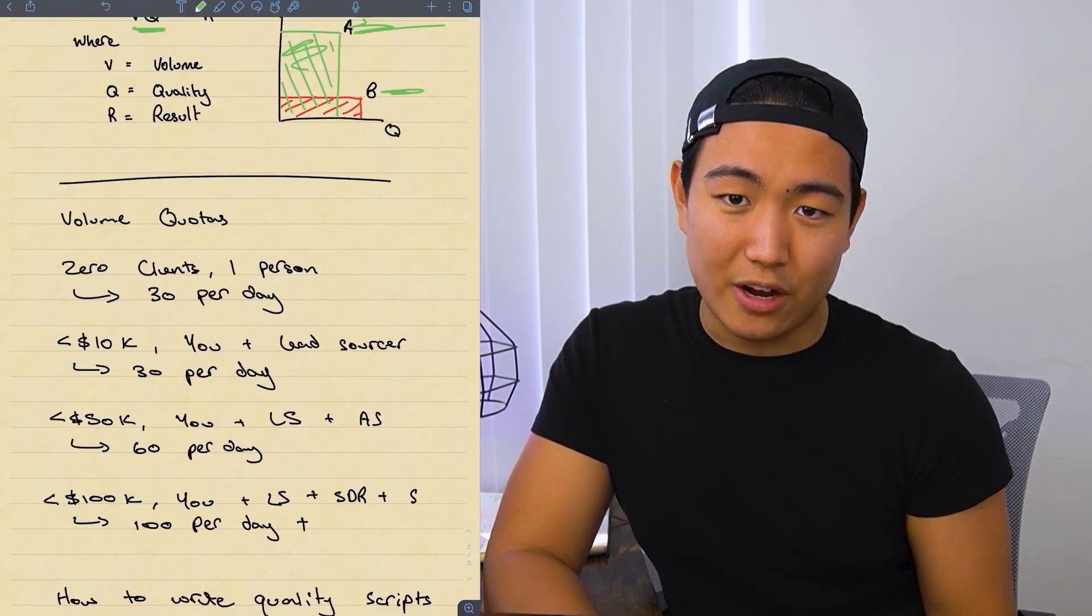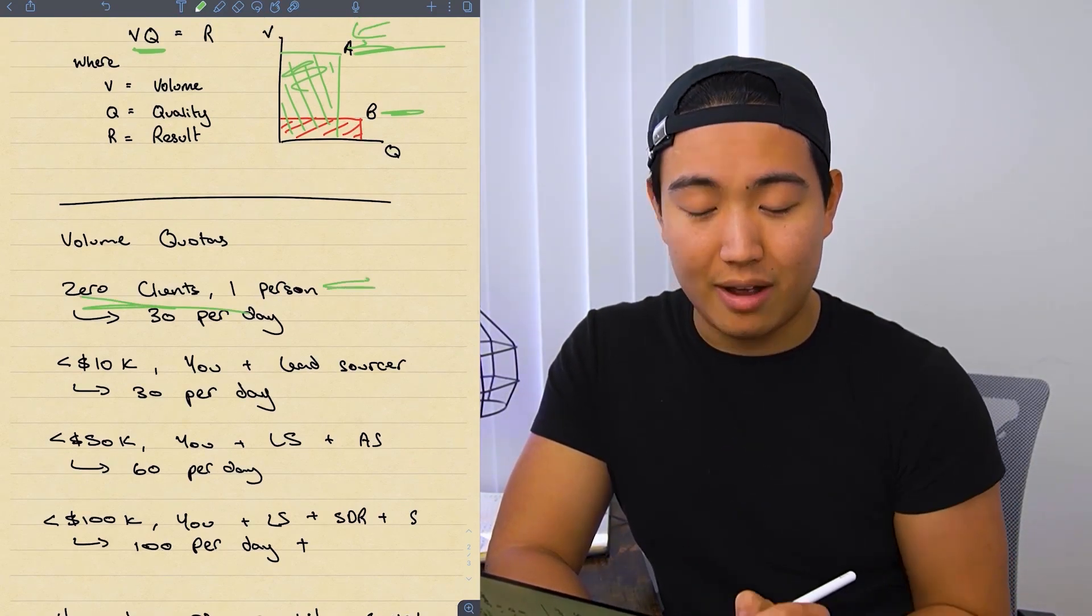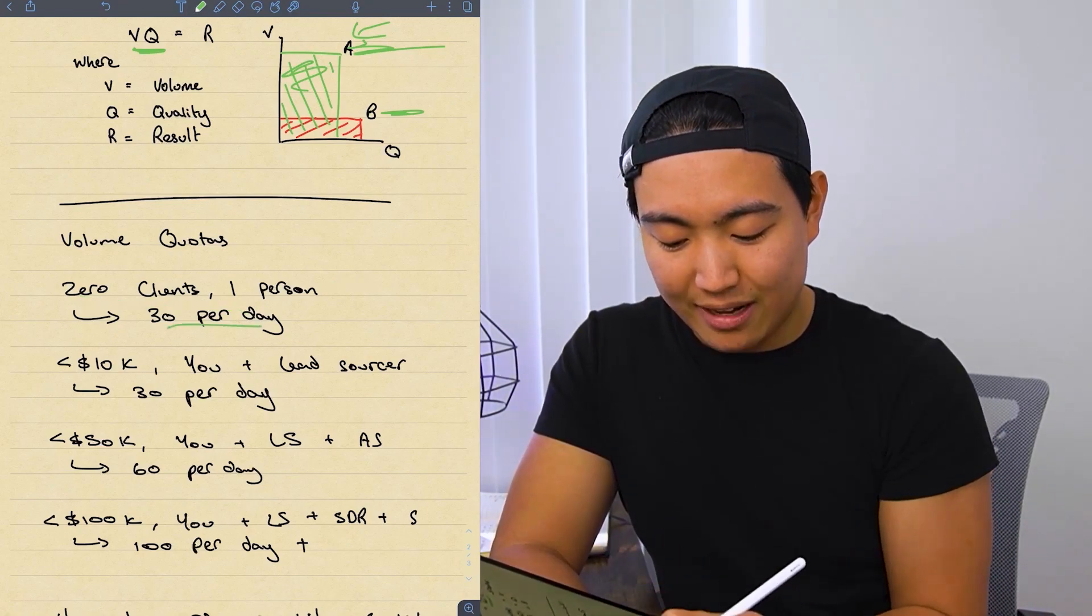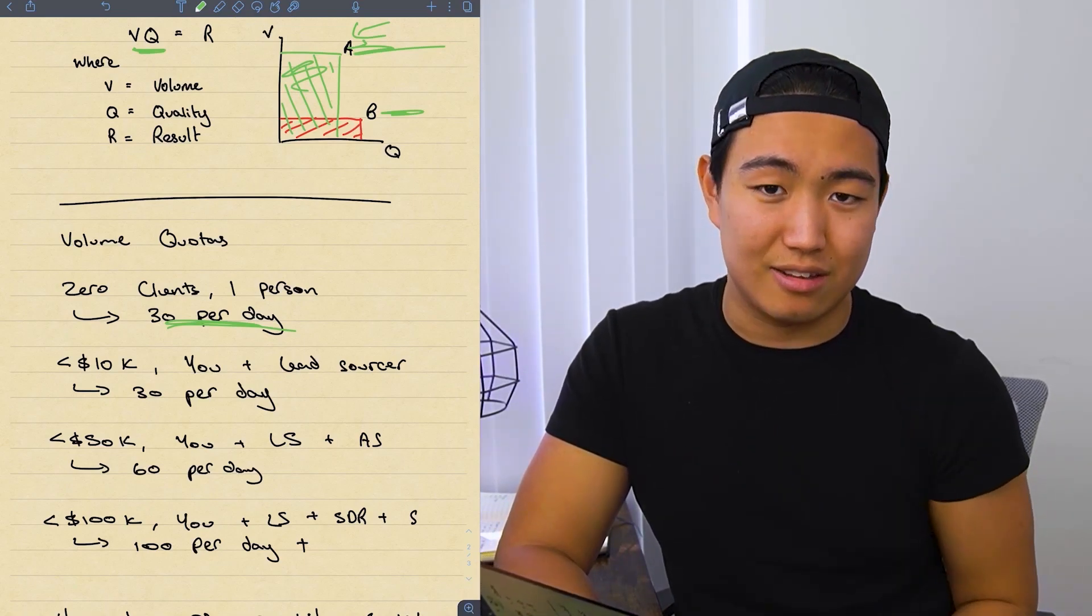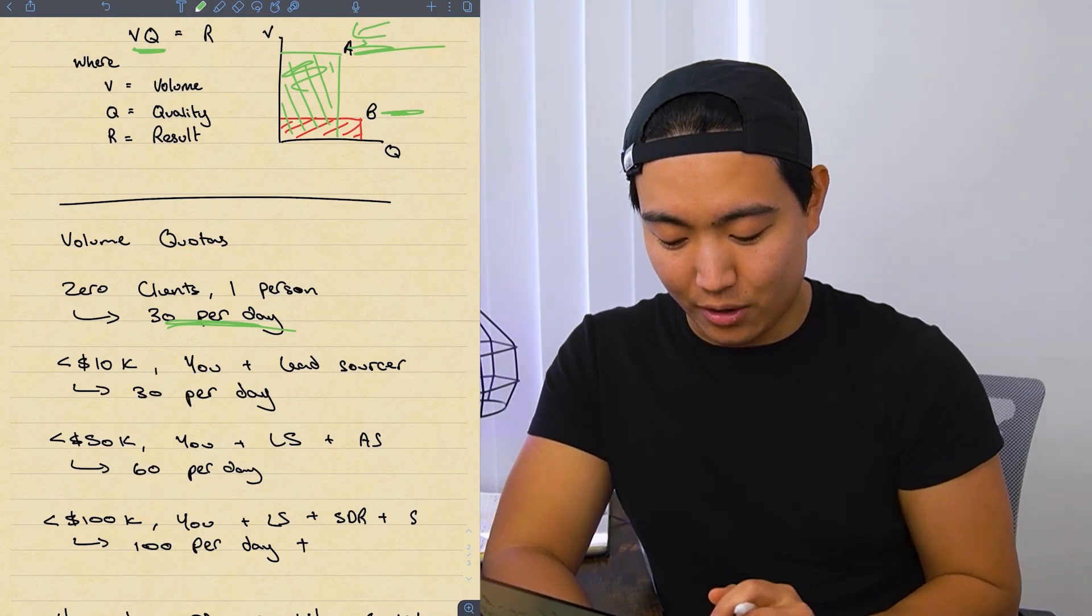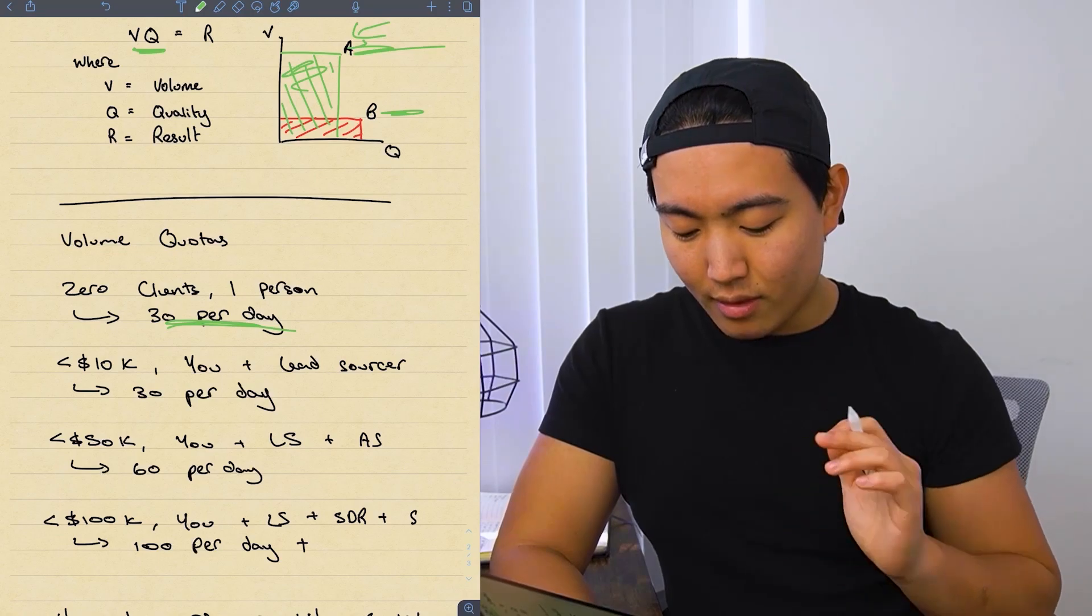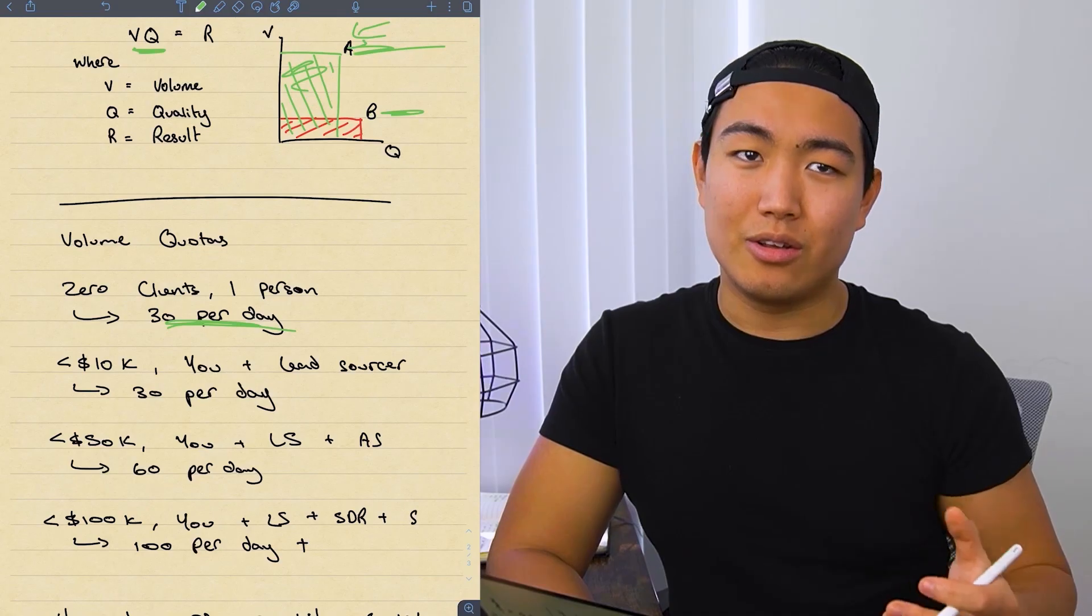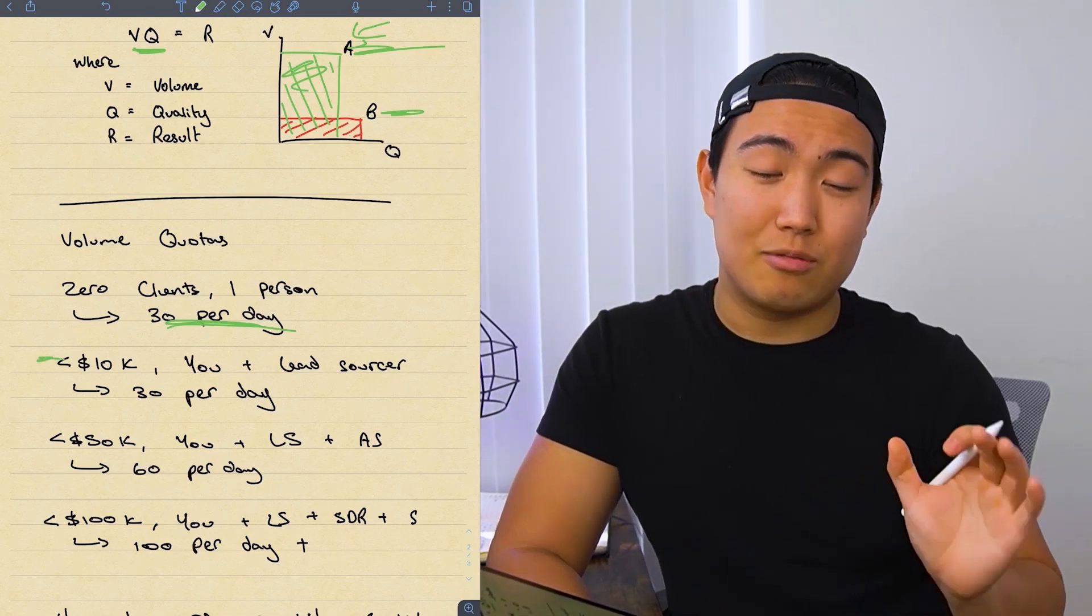So to give you guys more specific quotas. If you have zero clients, you're just getting started, you're one person, you have no team members, no appointment setters, no nothing, you should be hitting 30 every single day. Monday to Friday minimum. You can do Saturdays as well, but Saturdays are slightly less effective. So Monday to Friday, you need to be sending minimum 30 in order to get your foot off the ground. Back in 2020, this number was actually 20. However, the barrier to entry is just higher. You need to be sending 30 a day.